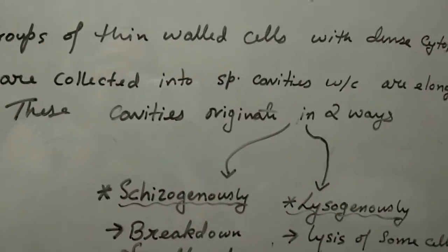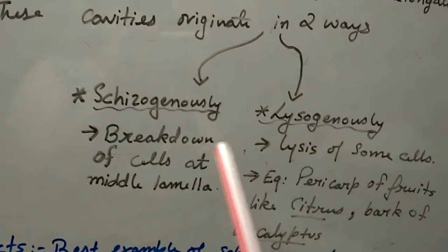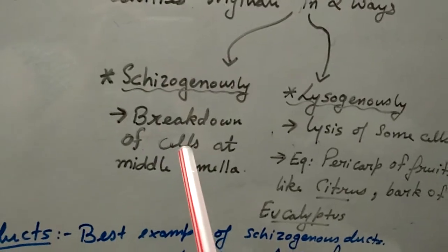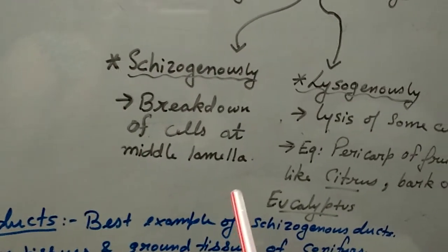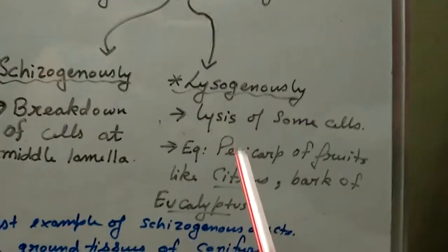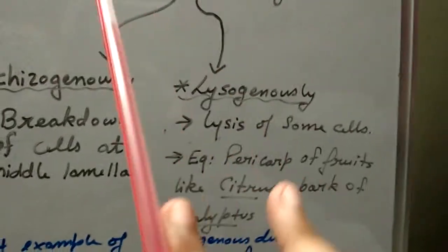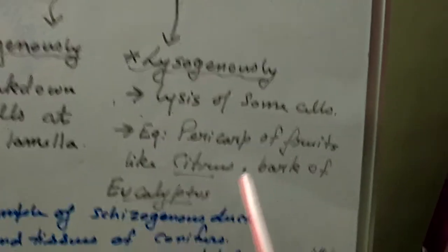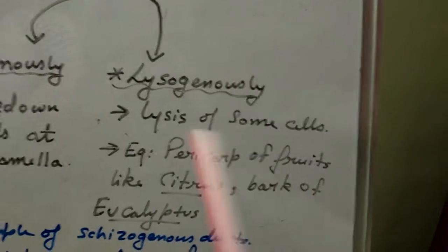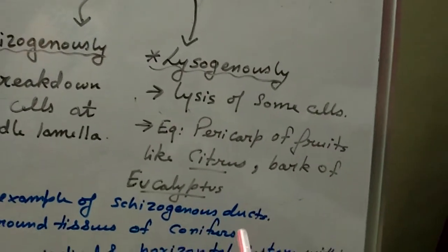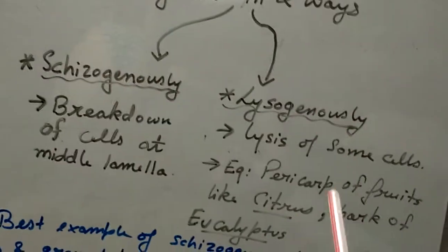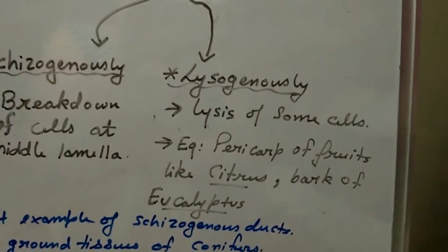The two ways by which these special cavities are obtained are schizogenously and lysogenously. Schizogenously involves the breakdown of cells at the middle lamella, while lysogenously involves lysis of specific cells. Lysogenous cavities are found in the pericarp of fruits like citrus and the bark of eucalyptus.